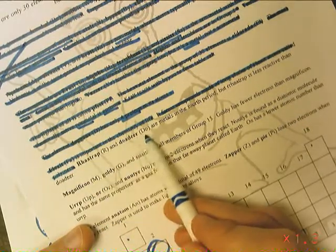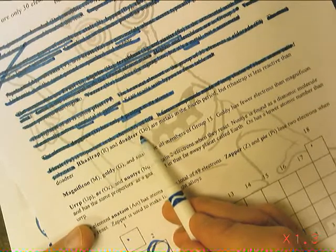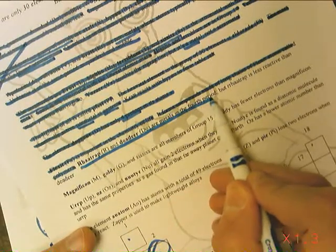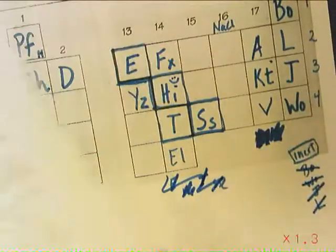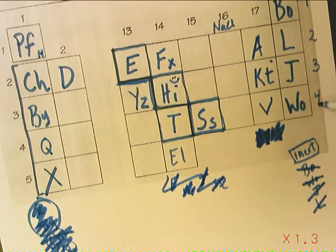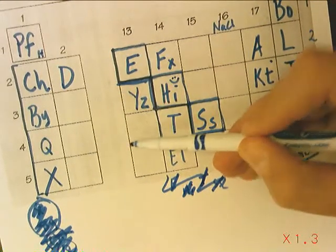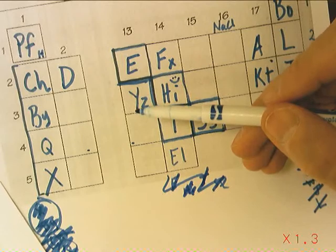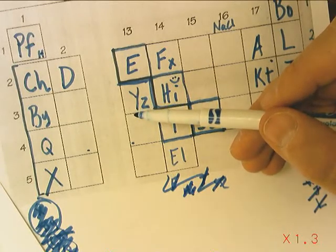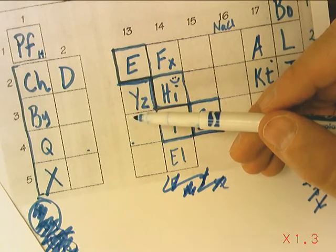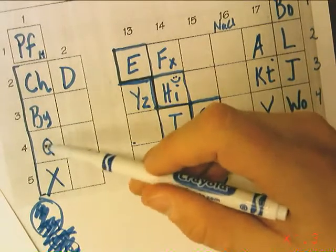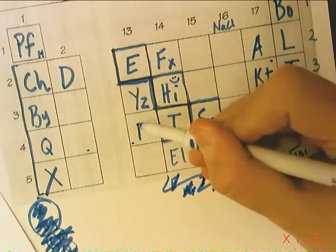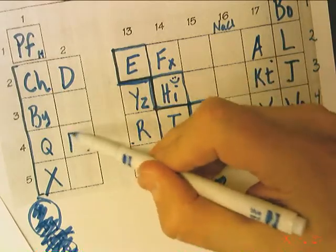RATTRAP and DOE-A-DEER are metals in the fourth period. One, two, three, four. Metals in the fourth period. It must be here and here. Those are the metals left over in the fourth period. But RATTRAP is less reactive than DOE-A-DEER. I know elements are really reactive over here, so they must get less reactive as you go that way. So RATTRAP must be this and DOE-A-DEER must be this.